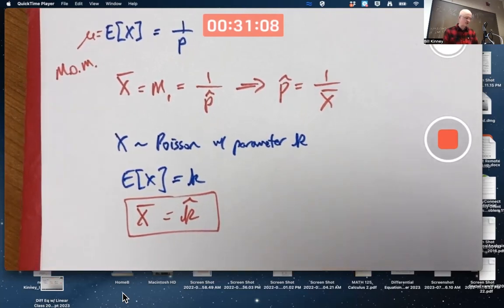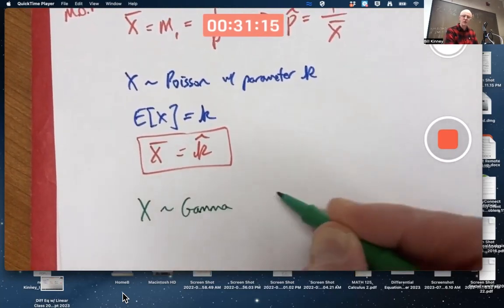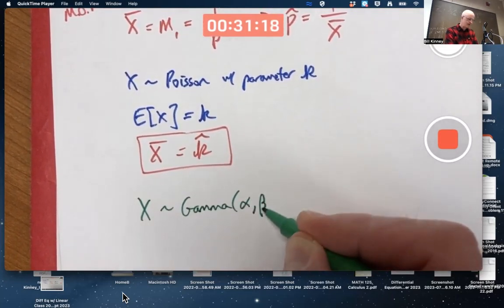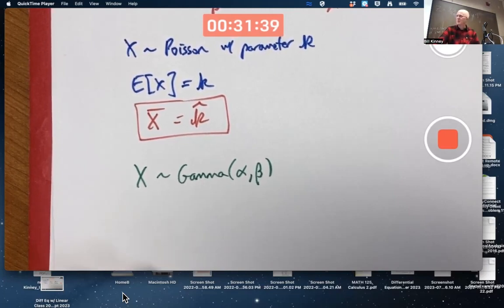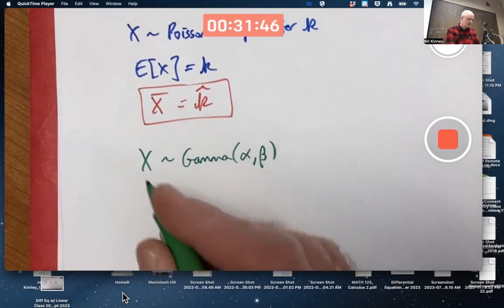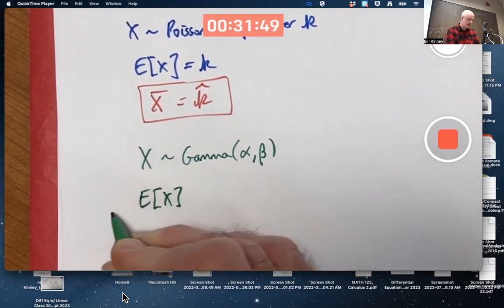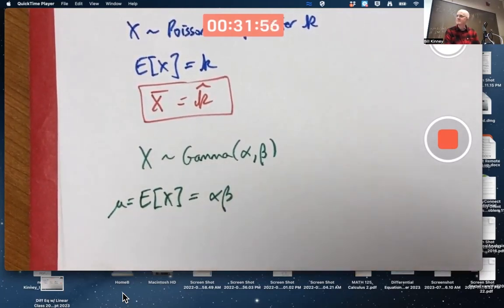Let's do a harder example. Let's do the gamma distribution. X is gamma with two parameters. I'll put them in parentheses here, alpha and beta. We'd like to find, we've got two parameters here, right? Alpha and beta. We'd like to estimate both at the same time based on a data set coming from a gamma distribution. So if we're going to solve for two unknown parameters, estimators for those things, I guess we need two equations. We know the expected value of X, the mean, is alpha times beta. Maybe you don't remember that, but that's what it is.